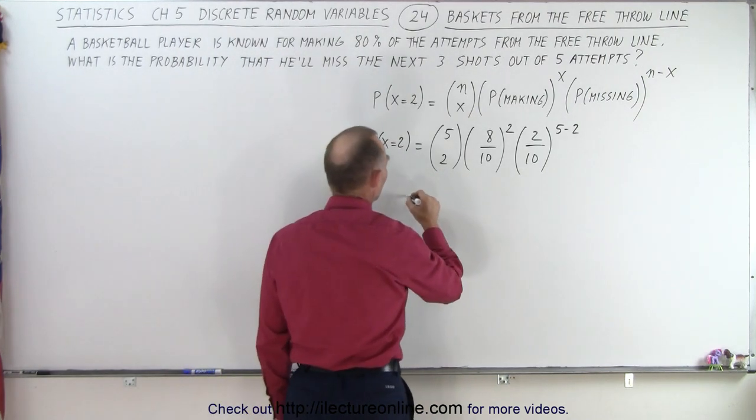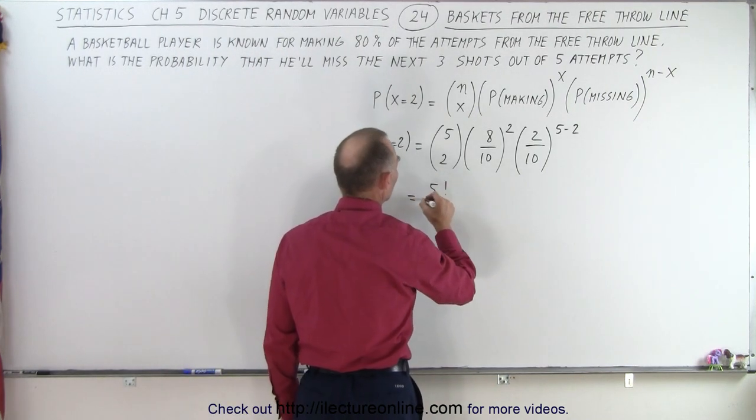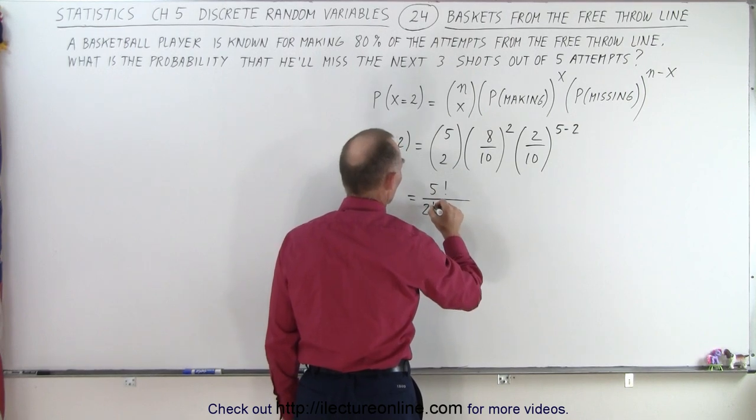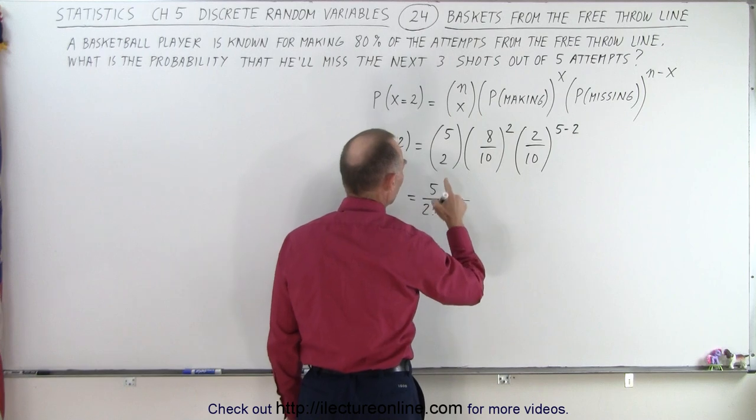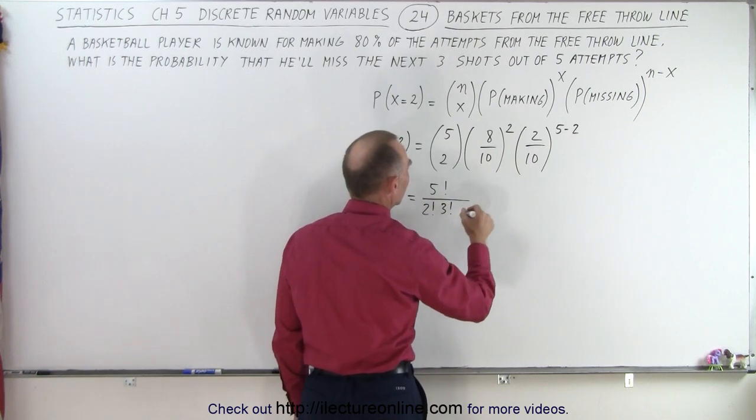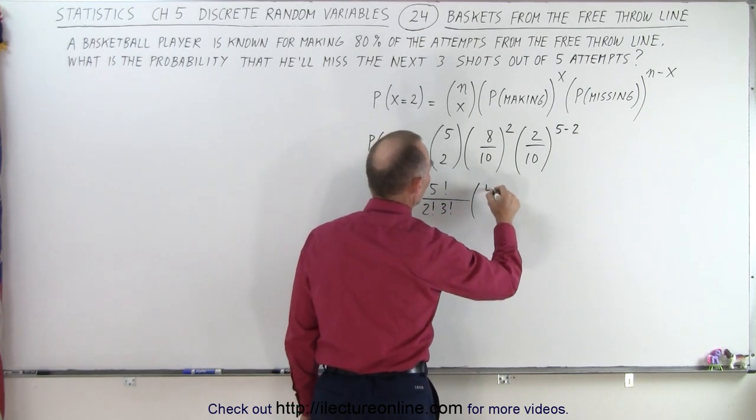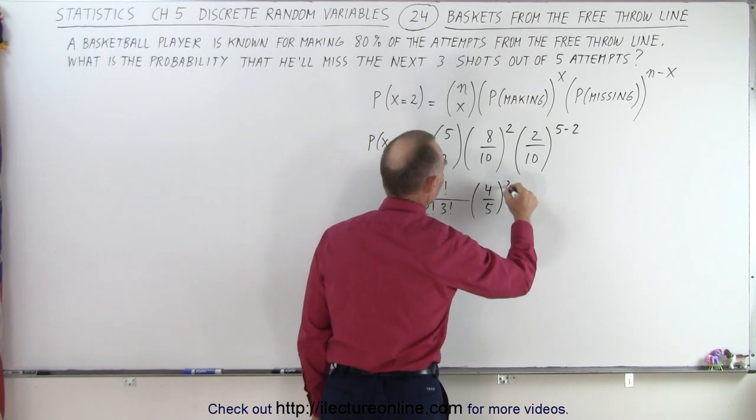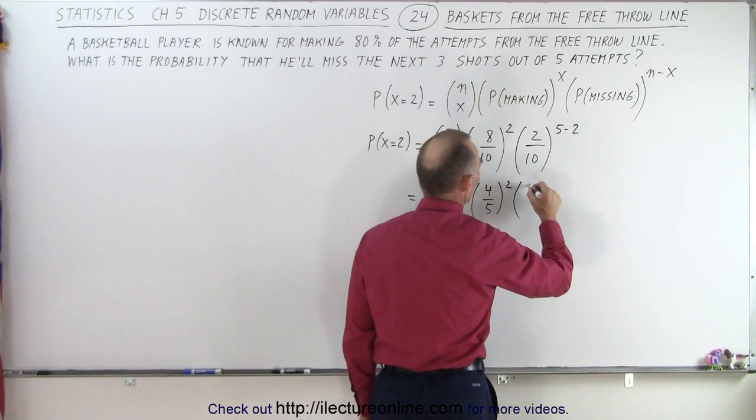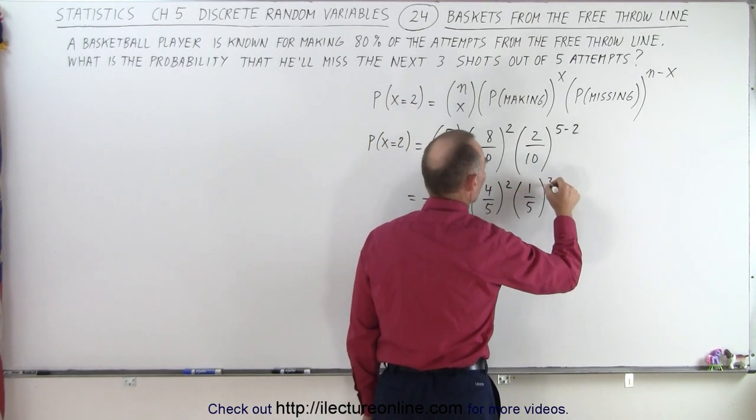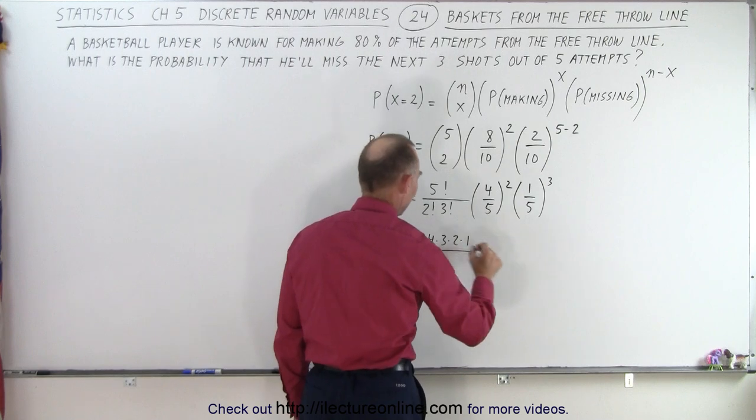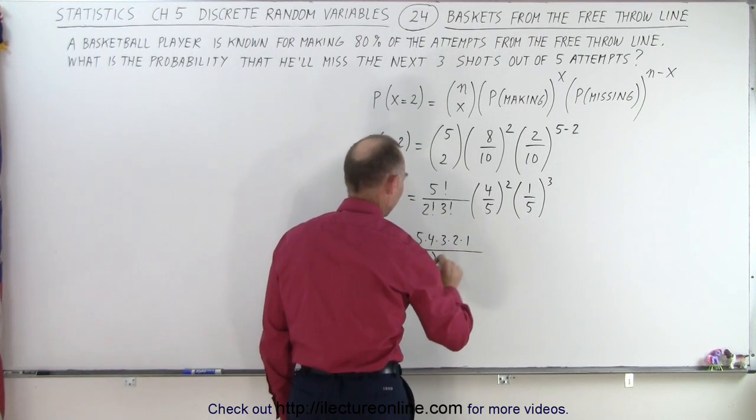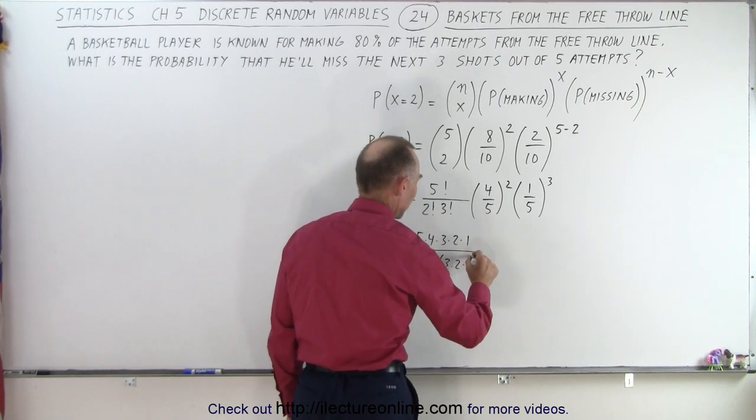So simplifying this a little bit, so this would be equal to five factorial divided by two factorial over n divided by three factorial, because that would be five minus two, which is three. Then eight tenths is the same as four fifths to the second power, and two tenths is one fifth to the third power. So this will become five times four times three times two times one divided by two times one and divided by three times two times one.